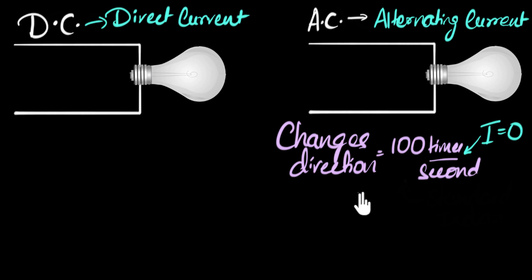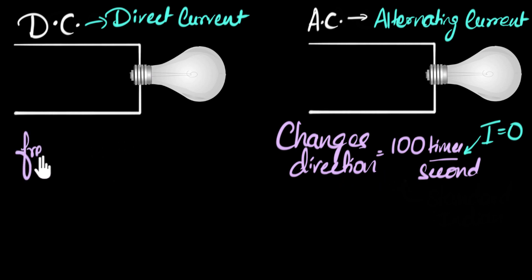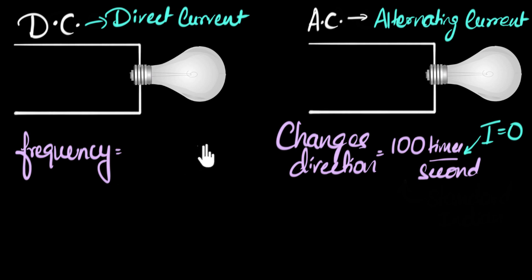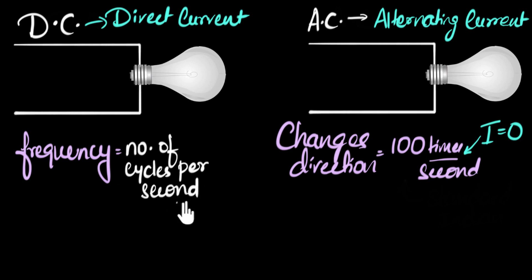This might bring more questions to mind. Like, why do we choose 100 times a second, or why do we even use alternating current in the first place? We'll address these questions towards the end of the video. But first, let me talk about the standard way of representing how quickly the current changes its direction. The standard way is by coming up with a number called frequency. What does frequency represent? It represents the number of cycles the current goes through per second — number of cycles per second.